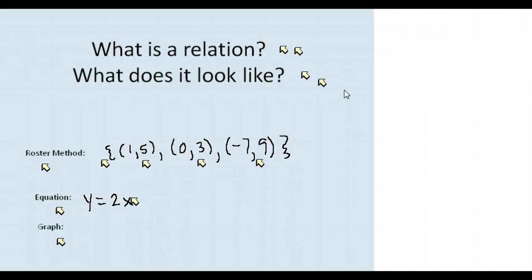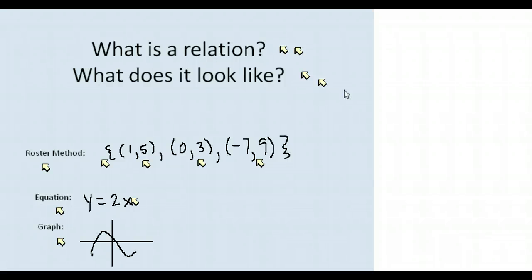Lastly, a relation could be represented as a graph. They may show you the graph of the relation, which could be a line or a curve. This could be an example of a relation — they didn't tell us exactly what the relationship was, they showed us. Each individual point on this graph, and notice there's an infinite number of them, shows us a relationship X to Y.